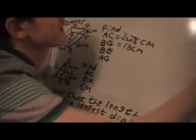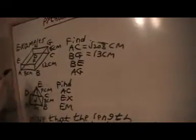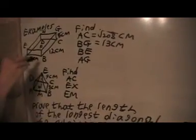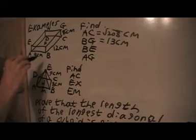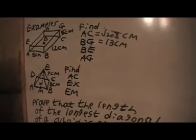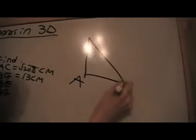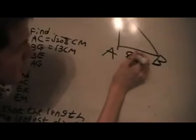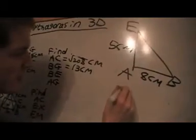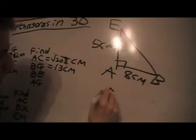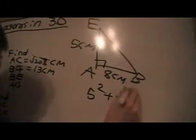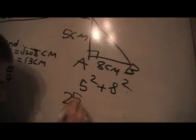So the next one we're going to find is this length here, BA. So we're going to make another triangle here: A, B, A. So we've got 8 cm along the bottom and 5 cm going up, so we've got right angles here. So that's 5 squared plus 8 squared, so that's 25 plus 81.